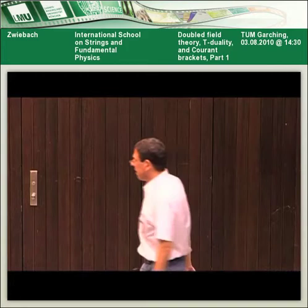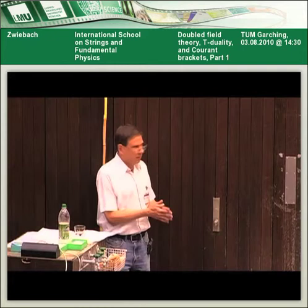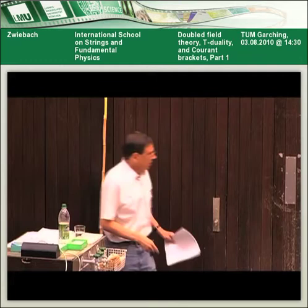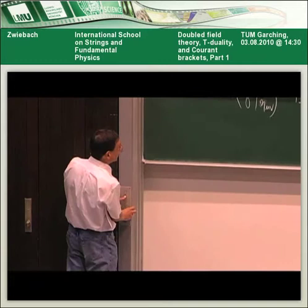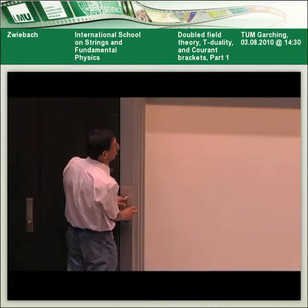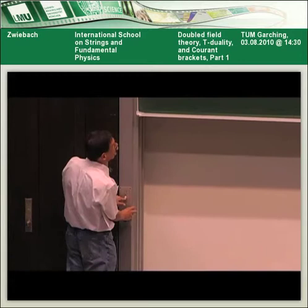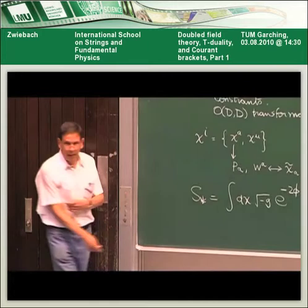So now we're going to proceed to find a series of results that are half familiar to people. Some of them we'll do quickly, and some of them you will do as exercises. The first obvious thing is the Hamiltonian — what is the Hamiltonian for strings moving in such a toroidal background space? The look of the Hamiltonian will be quite interesting and useful for our developments.